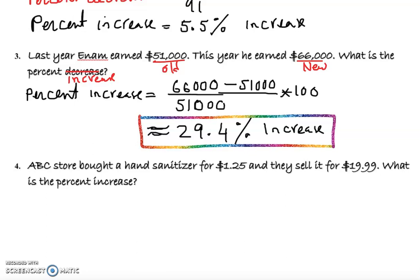Let's do the last one here. ABC store bought a hand sanitizer for $1.25 before this outbreak happened, and they sell it for $19.99. What is the percent increase? Here you go, we are going to look to see the new one. The new one is the big one here, that's the new, and this is the smaller one, that's the old one. So we do the same thing. We put down new, which is $19.99, over old one is $1.25. We're going to multiply later, but first we should subtract the difference, minus $1.25, times 100.